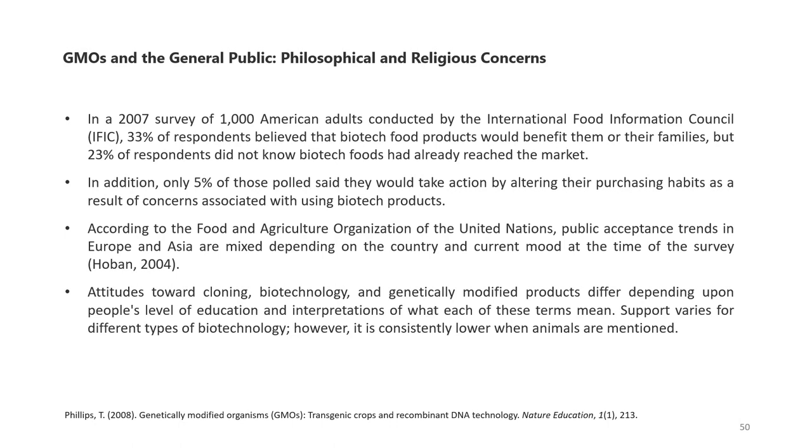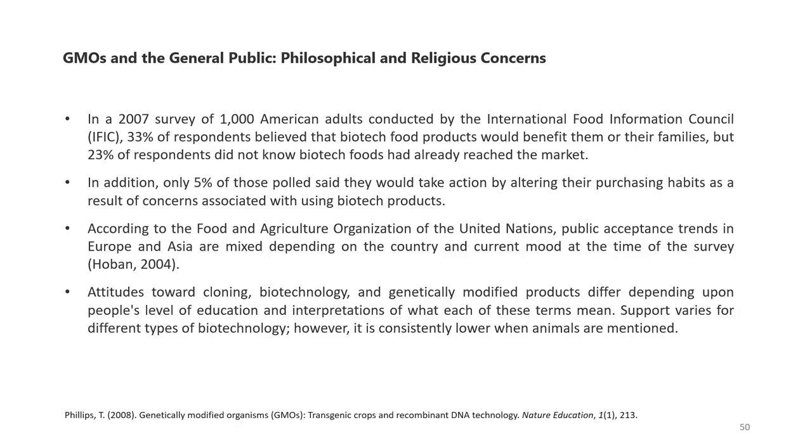GMOs and the general public — philosophical and religious concerns: in 2007, a survey of 1000 American adults conducted by the International Food Information Council found that 33% of respondents believed that biotech food products would benefit them or their families, but 23% did not know biotech foods had already reached the market. Only 5% of those polled said they would take action by altering their purchasing habits due to concerns about biotech products. According to the Food and Agriculture Organization of the United Nations, public acceptance trends in Europe and Asia are mixed. Attitudes towards cloning, biotechnology, and genetically modified products differ depending upon people's level of education, and support is consistently lower when animals are mentioned.